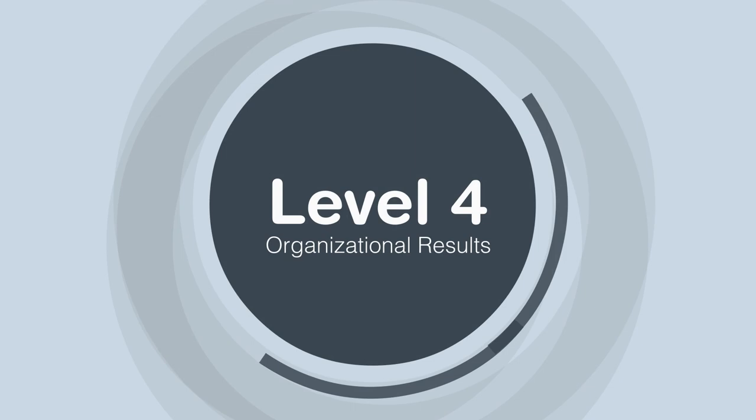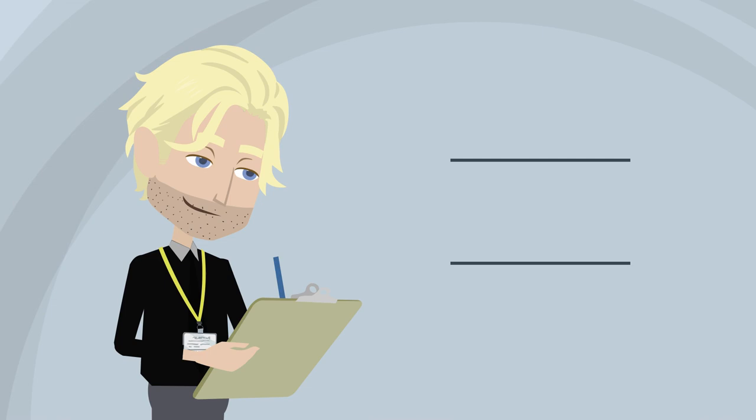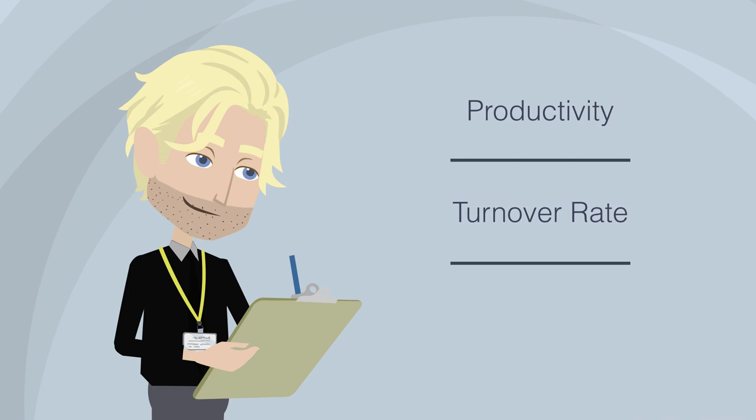Level four: Organizational results. This last level evaluates the impact of the training on the organization by measuring indicators such as productivity, turnover rate, and quality of work. Although this is the most important level, it is rarely done because of the difficulty in linking the effects of the training to the measured outcomes.